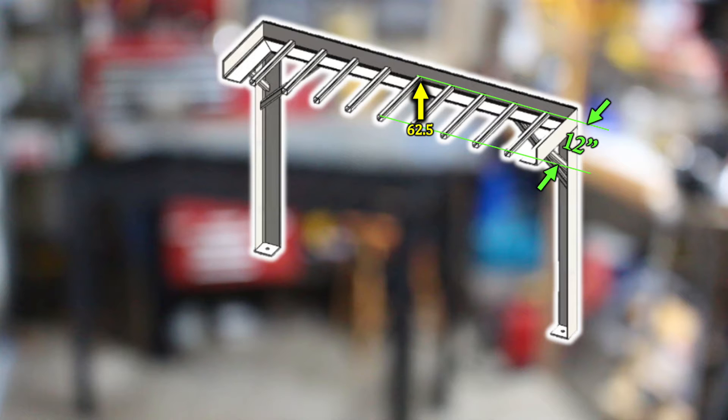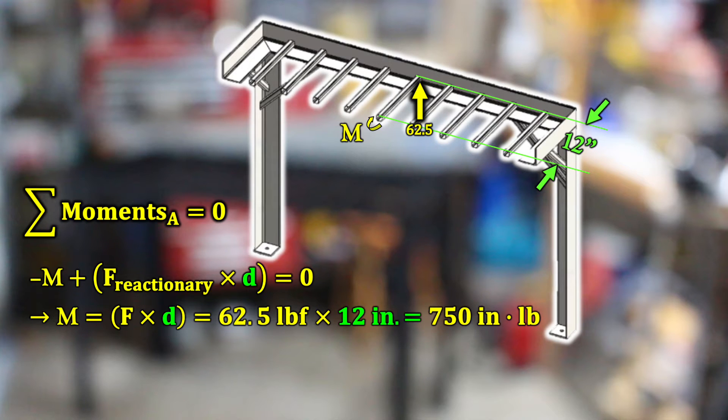And at the cut end of this free body diagram, there is a reactionary moment equal to that reactionary force where that square tube meets the angle perimeter framing multiplied by that 12 inch distance, which is half the length of that square tube. 62.5 pounds of force times 12 inches equals 750 inch pounds. That is the internal reactionary moment in the square tube.